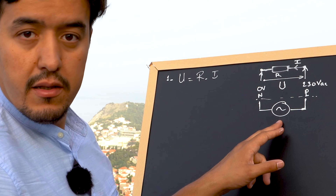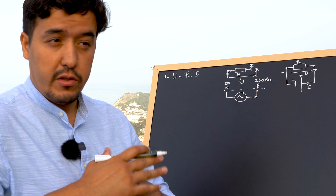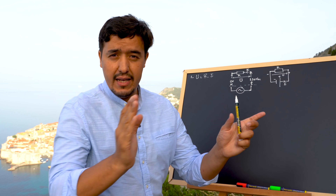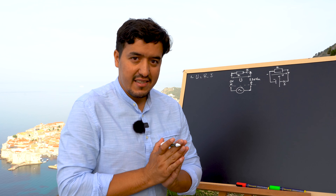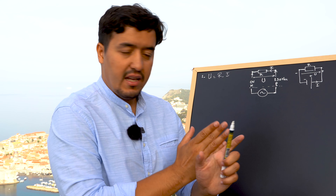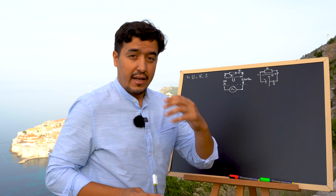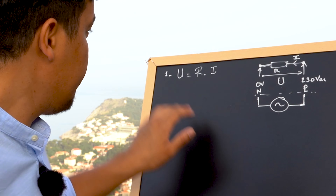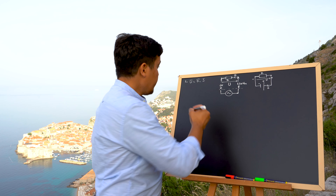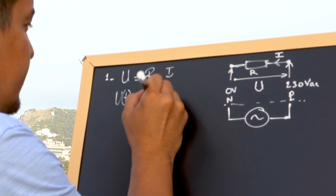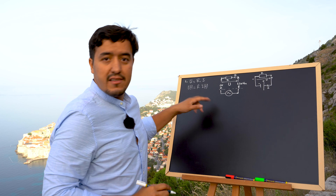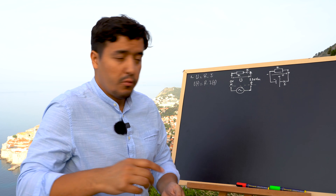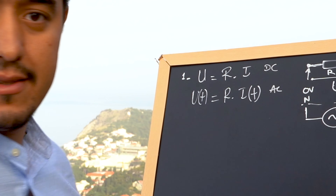For AC supply, the current may not be in phase with the voltage. If you scope the impedance, you'll see the voltage is a sinusoid and the current will also be a sinusoid, but it may be delayed. Now for a pure resistance, there is no delay — the voltage is exactly at the same phase as the current. However, when you have other impedances like inductances and capacitors, the current is never in phase with the voltage.